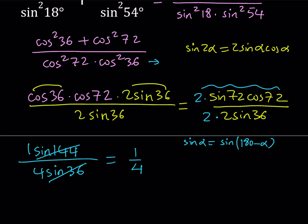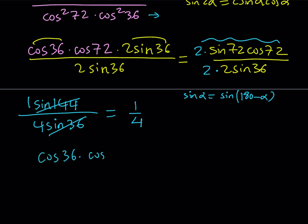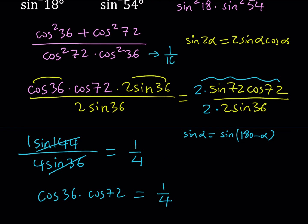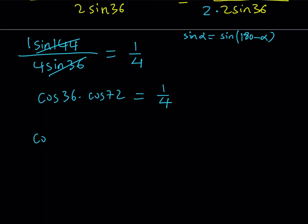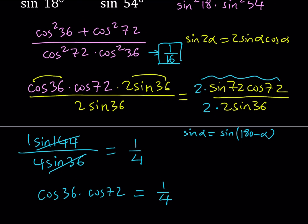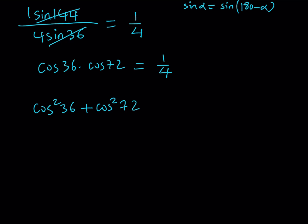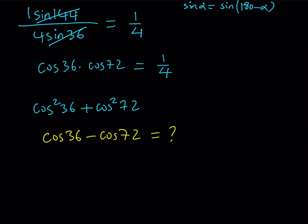I do need to square that, so when I square it, it's going to be 1 over 16. So the denominator of my expression equals 1 over 16. Now I need to simplify the numerator: cosine squared 36 plus cosine squared 72. To do that, I'm going to use the expression cosine 36 minus cosine 72. If I can find the value of that, I can find cosine squared 36 plus cosine squared 72. I'll use substitution — let's call cosine 36 equal to A and cosine 72 equal to B. My goal is to find A minus B.